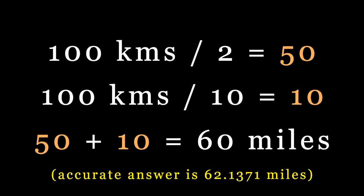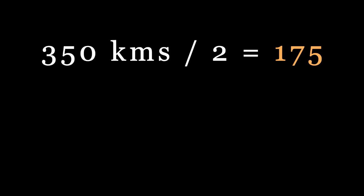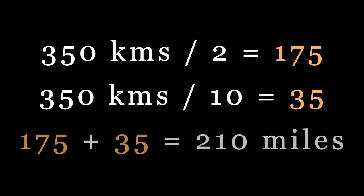Now let's try a more difficult example. If you want to convert 350 kilometers, divide it by 2. The answer is 175. Then divide 350 by 10, and you have 35. Add up 175 and 35 for an answer of 210 miles.